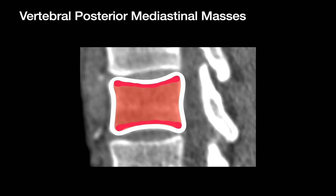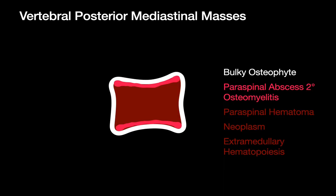Moving on to vertebral posterior mediastinal masses, the differential diagnosis includes bulky osteophytes — which can sometimes look quite mass-like — paraspinal abscesses usually in the setting of vertebral osteomyelitis, paraspinal hematomas, the occasional neoplasm, and the rare extramedullary hematopoiesis cases.